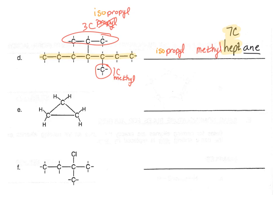Let's number it. In the forward direction, the isopropyl is on number four and the methyl is on number five — totaling nine. In the reverse direction, the methyl is on three and the isopropyl is on four — totaling seven. So we choose the reverse direction, and our answer is 4-isopropyl-3-methylheptane.